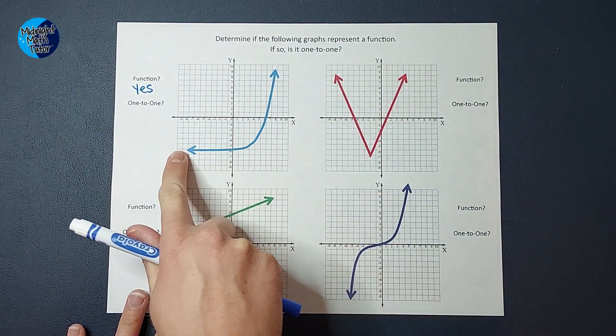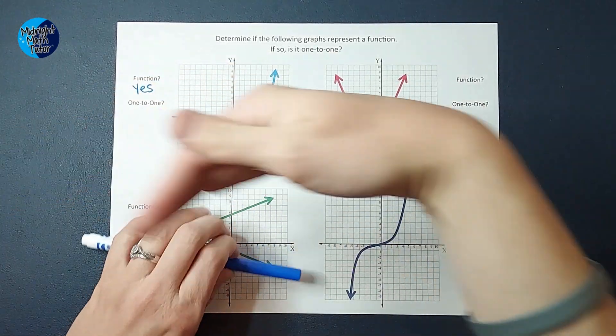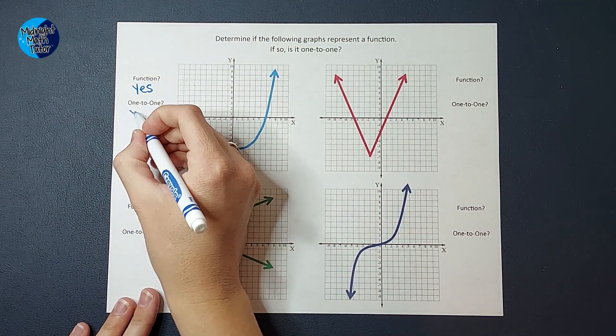Again, it kind of looks like it does there, but that line is not flat. It is slanted just a little bit. So is this one one-to-one? Yes.